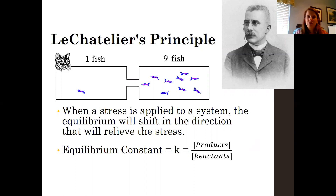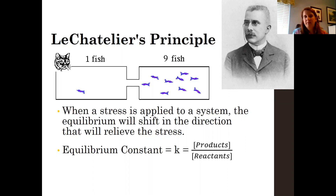We can do things to our system where the reactions are taking place. We can change concentrations and stress the system, and when we stress a system, the equilibrium is going to shift to either the forward reaction or it will shift to the reverse reaction in order to re-establish that equilibrium. When it shifts to the right, that means it's shifting towards the forward reaction — reactants to products — in order to make more product. If the reaction shifts to the left, the reverse reaction is being favored and we're trying to make more reactants.